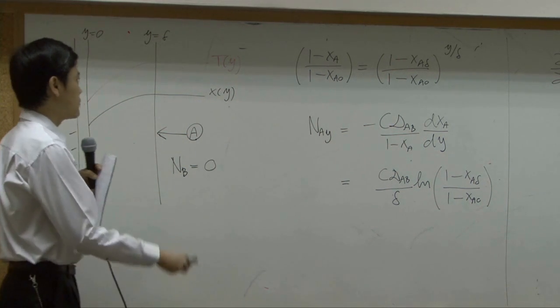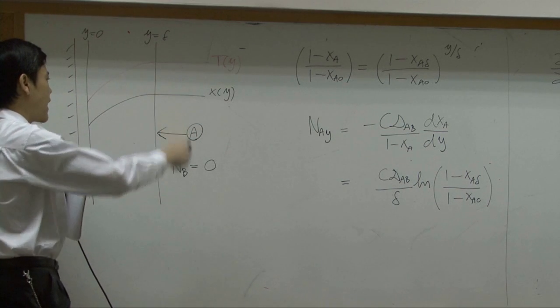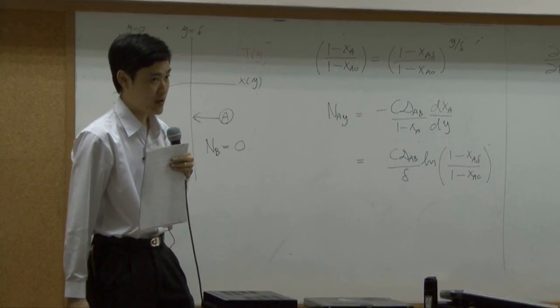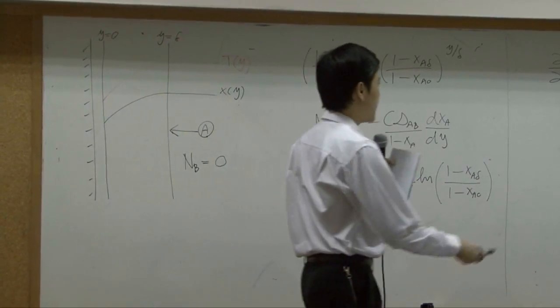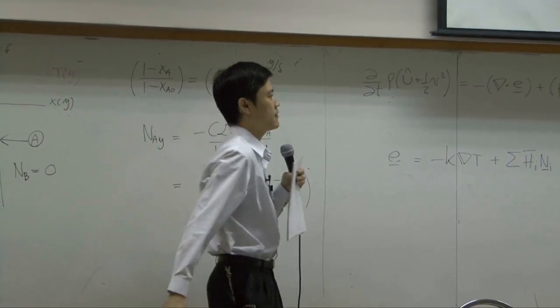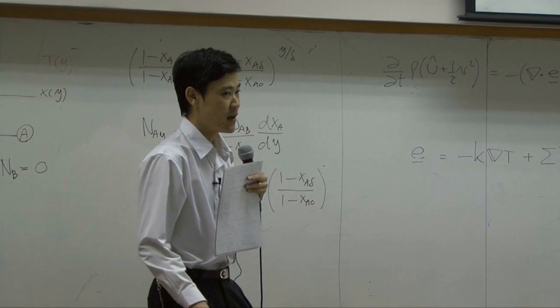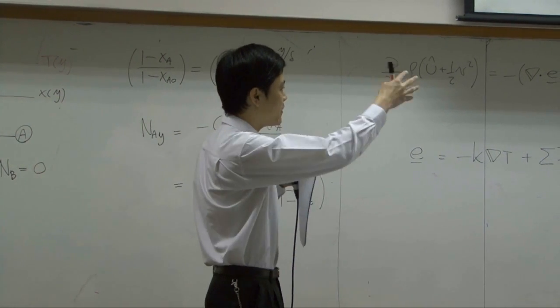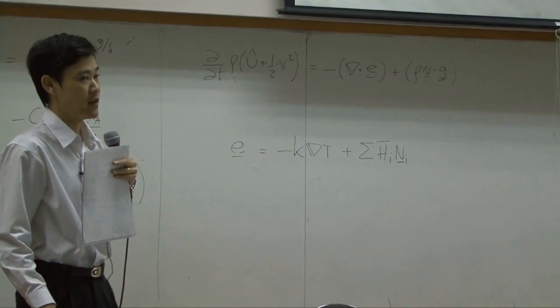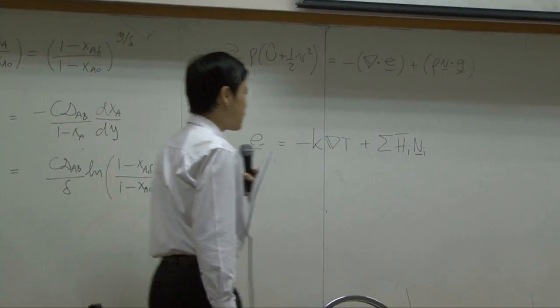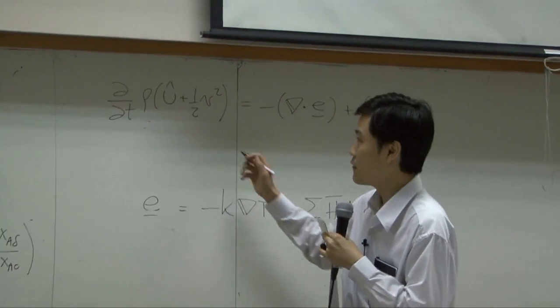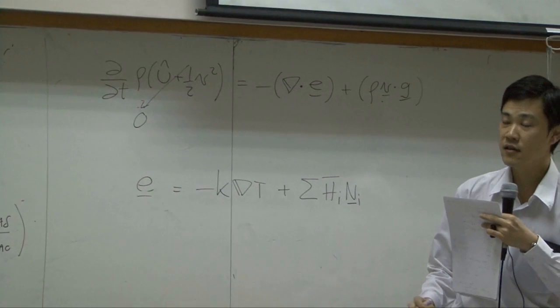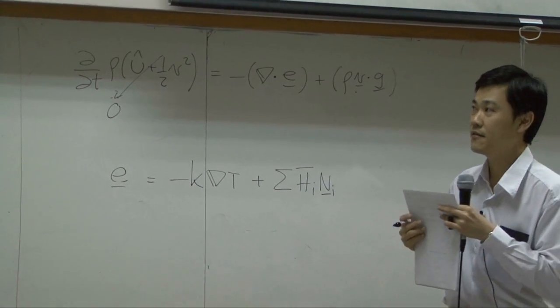For today, we will try to figure out the temperature profile by using equation of energy. And this is equation of energy. Again, I use vector form. I do not expand the vectors just for convenience. In vector form, the first term here will be dropped to be zero because it is steady state.